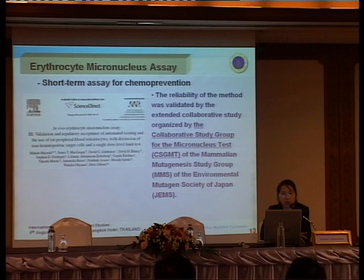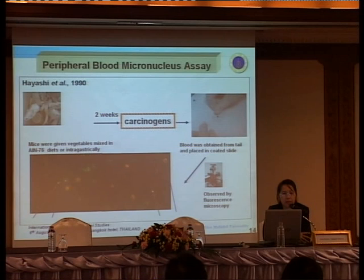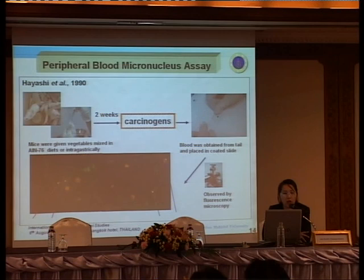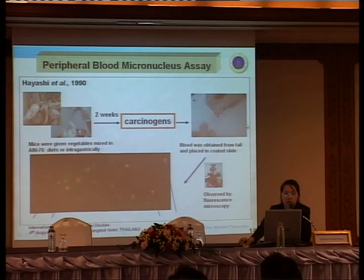Let me briefly describe this method. The peripheral blood micronucleus assay is conducted in an animal model, established by Professor Hayashi in 1990. Mice were given the vegetable mix in the standard diet, or rats were given the sample intragastrically, daily for two weeks before the carcinogen was administered. Two types of carcinogens were given to mice: direct-acting carcinogens and indirect-acting carcinogens. Blood was taken at specified times from the tail and placed on acridine orange-coated slides, and the micronuclei were counted.